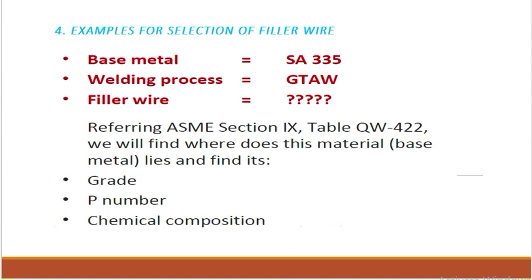Example for selection of filler wire: assume the base metal is SA-335, the welding process is GTAW. How do we select the filler wire for this base metal? Referring to ASME Section 9, Table QW-422, we will find where this material is listed. We need to find this material in QW-422 under grade listing and find this grade, P-number, and chemical composition.